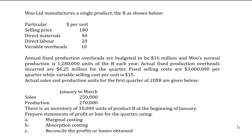Our question here: Wool Limited manufactures a single product, Product B, as shown. We are given the annual fixed production overheads budgeted, the actual fixed overheads, the selling costs — both fixed and variable — and the sales and production units for the quarter January to March. The question requires us to prepare statements of profit or loss for the quarter using marginal costing, absorption costing, as well as reconciling the profits obtained.